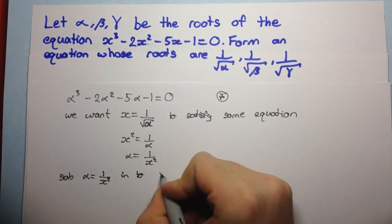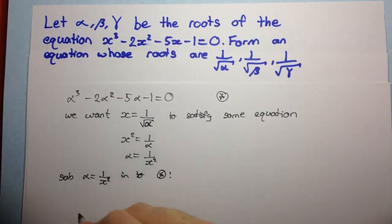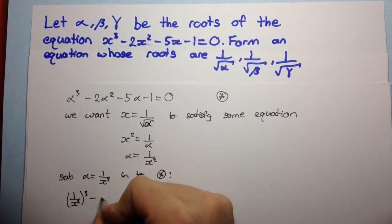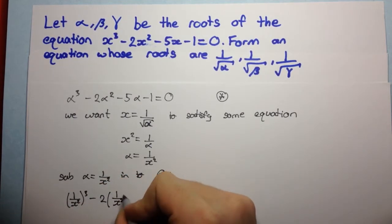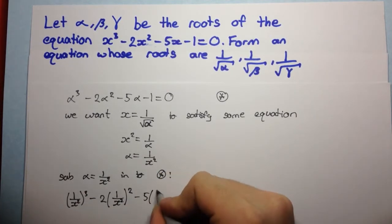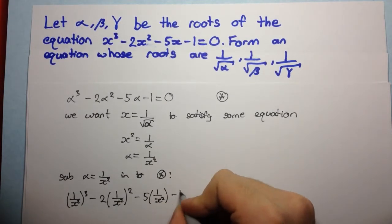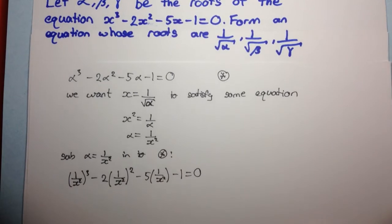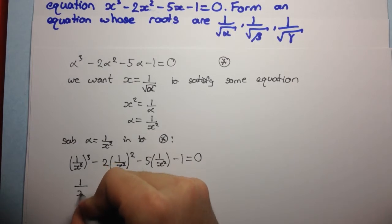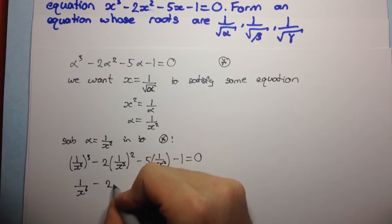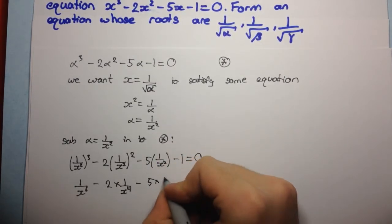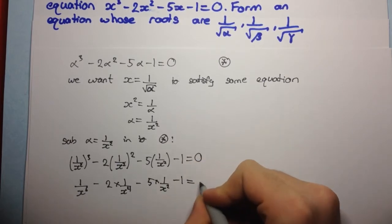So we substitute alpha equals 1 over x squared into star, and this is what we get. We get 1 over x squared, cubed, minus 2 times 1 over x squared, squared, minus 5 times 1 over x squared, minus 1 equals 0. This simplifies to 1 over x to the power 6, minus 2 times 1 over x to the power 4, minus 5 times 1 over x squared, minus 1 equals 0.